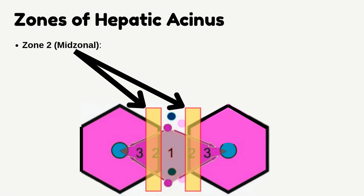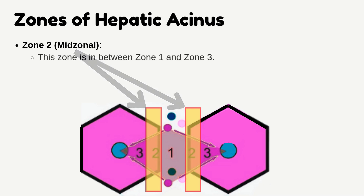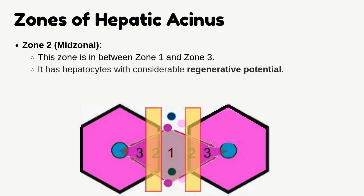Zone 2 is the Midzonal zone. This zone is in between Zone 1 and Zone 3, and it has hepatocytes with considerable regenerative potential.